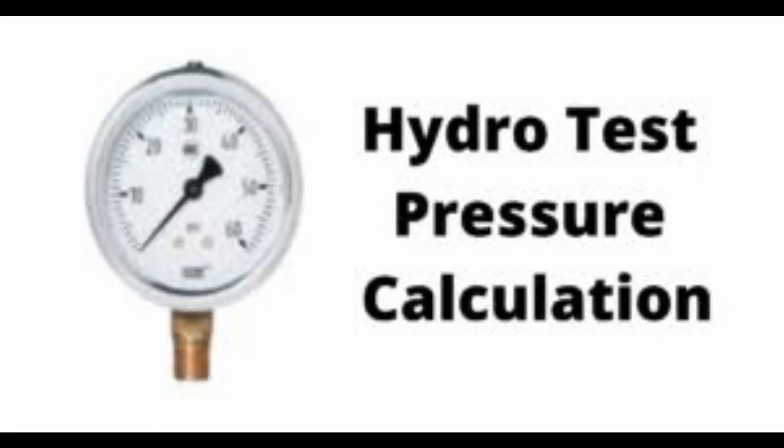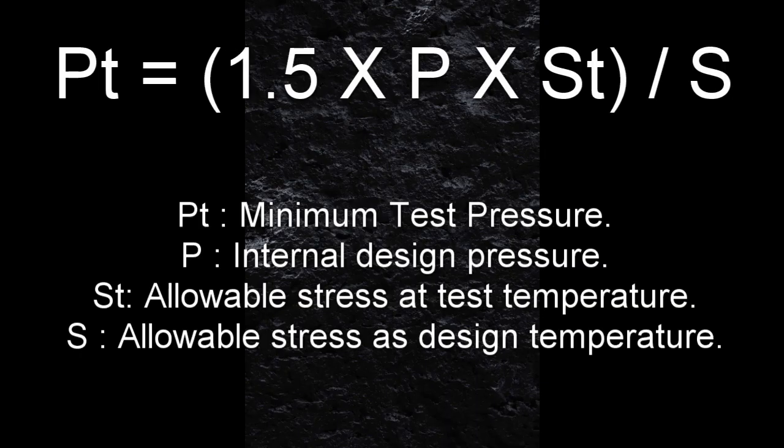Now we can see how to calculate hydro test pressure. Hydro test pressure is 1.5 times of design pressure. At design temperature above the test temperature, minimum test pressure can be calculated. If a test pressure would produce a stress in excess of the yield strength at test temp, the test pressure may be reduced to maximum pressure that will not exceed the yield strength at test temp.